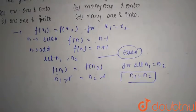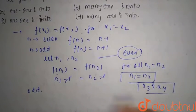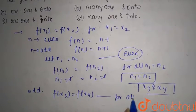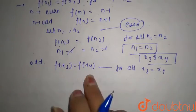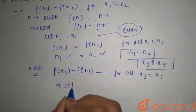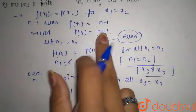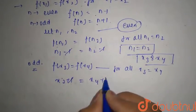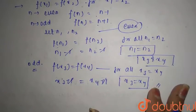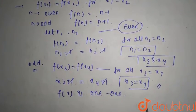Now let's check for odd numbers. Let x3 and x4 be the numbers. Then f(x3) equals f(x4) for all x3 equals x4. For odd numbers, f(n) equals n plus 1, so x3 plus 1 equals x4 plus 1. The ones cancel, giving x3 equals x4. So yes, the function is also one-one for odd numbers.